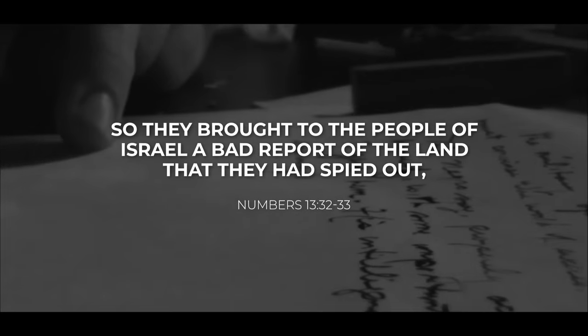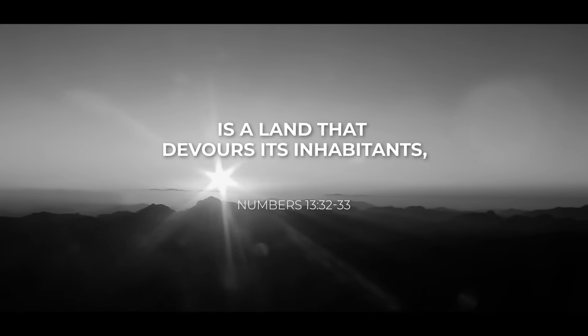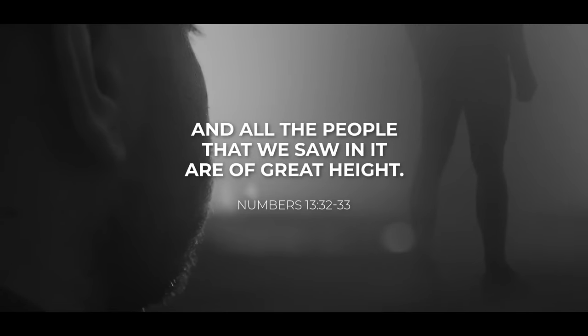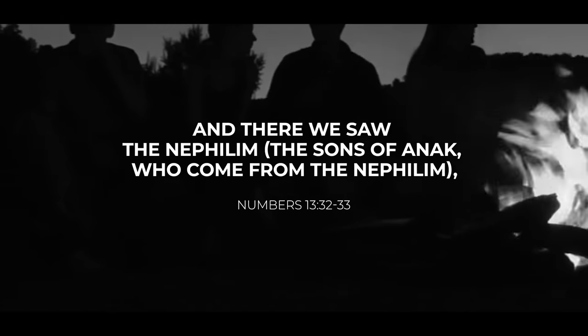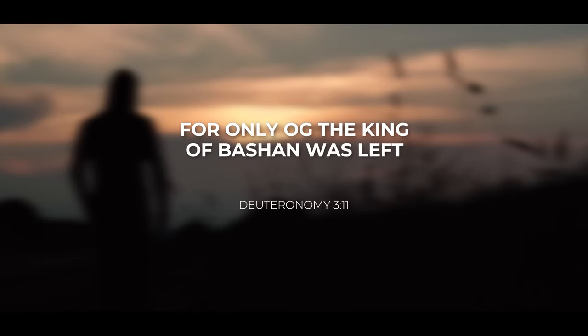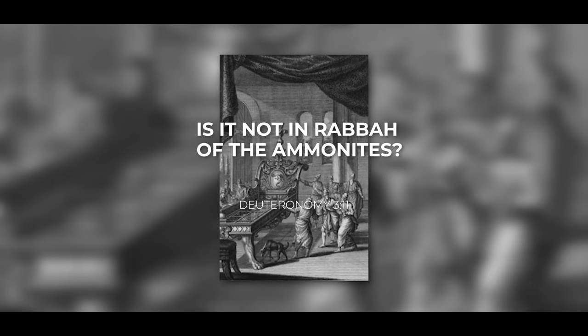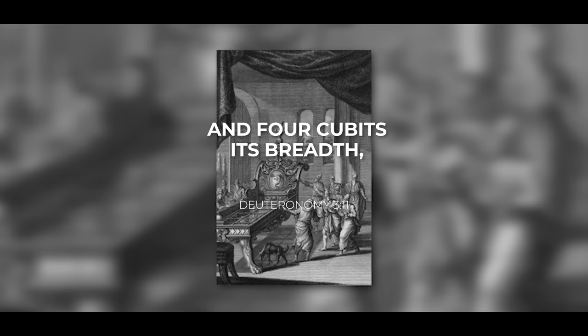The fact is that we see evidence of the Nephilim in the time period after the flood as well. There's a lot of evidence for this. We see this when Israel escaped Egypt and entered into the promised land. For example, Numbers 13 verse 32, So they brought to the people of Israel a bad report of the land that they had spied out, saying, The land through which we have gone to spy it out, it is a land that devours its inhabitants. And all the people that we saw in it are of great height. And there we saw the Nephilim, the sons of Anak, who come from the Nephilim. And we seemed to ourselves like grasshoppers, and so we seemed to them. Here are a few more examples. King Og during the time of the Exodus. Deuteronomy 3 verse 11, For only Og, the king of Bashan, was left of the remnant of the Rephaim. Behold, his bed was a bed of iron. Is it not in Rabbah of the Ammonites? Nine cubits was its length, and four cubits its breadth, according to the common cubit. The Rephaim here is the descendants of the Nephilim.